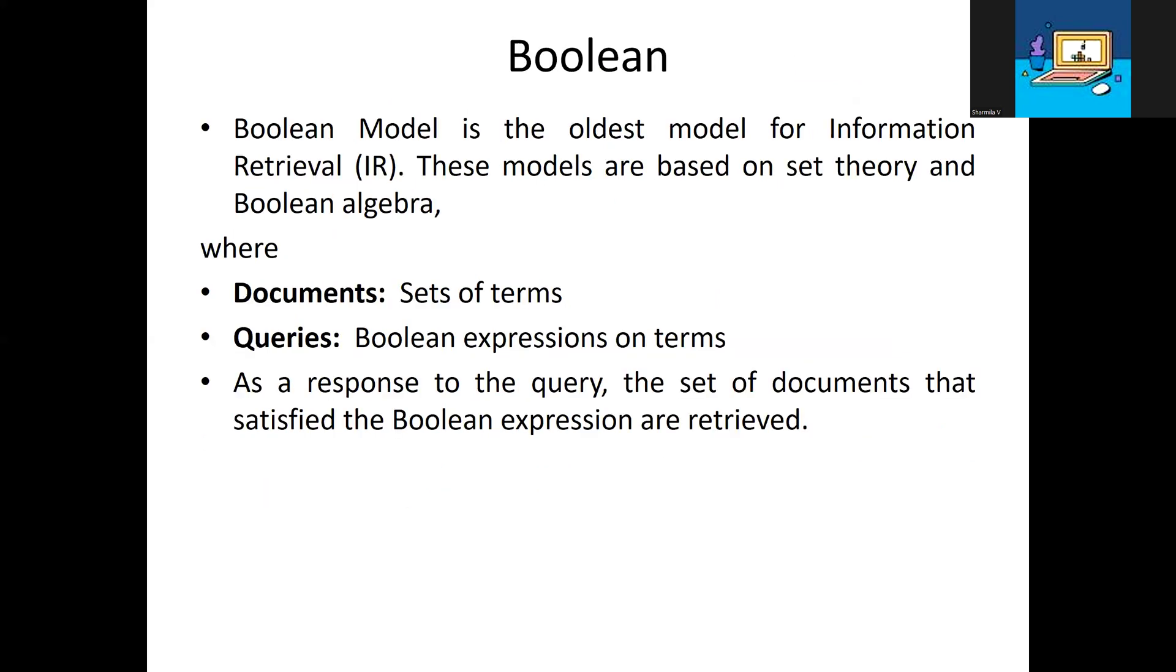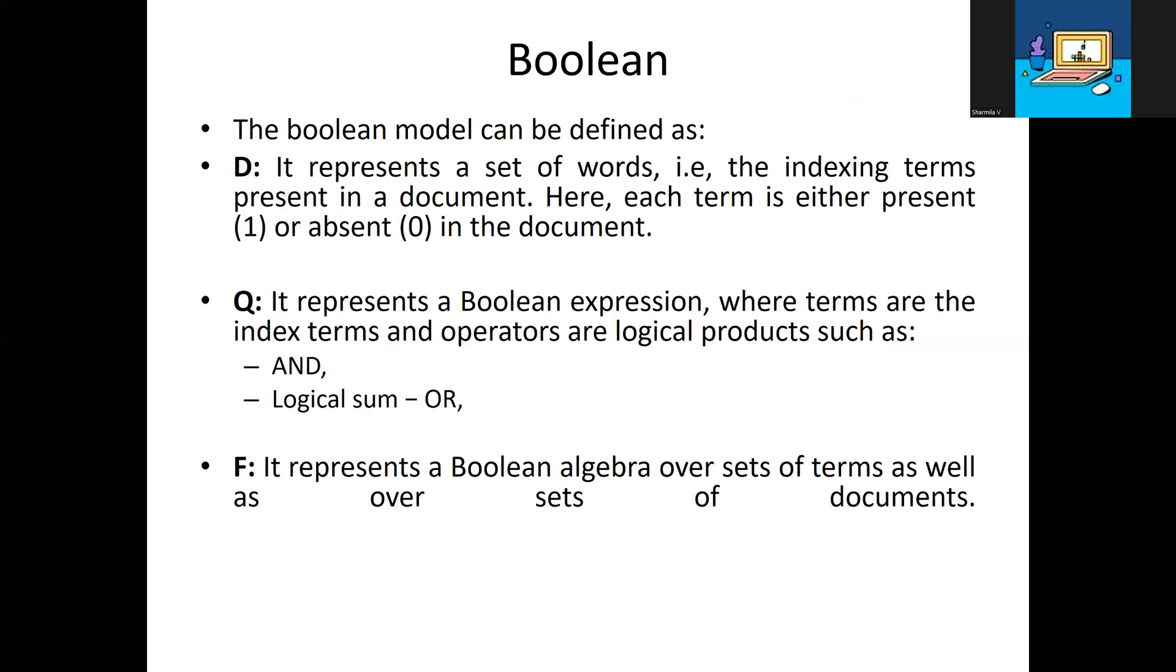The Boolean model is the oldest information retrieval model. In this model, we use set theory and Boolean algebra, including Venn diagrams. Documents are represented as a set of terms, and queries are Boolean expressions. Through the query, documents that satisfy the Boolean expression are retrieved.